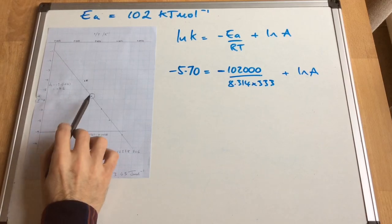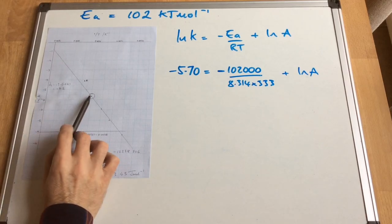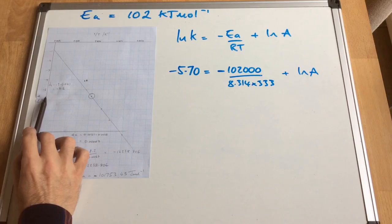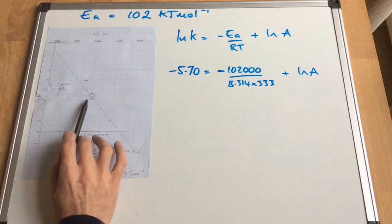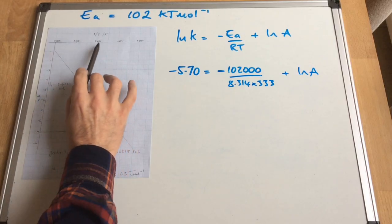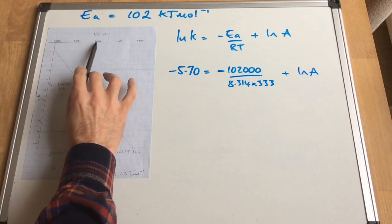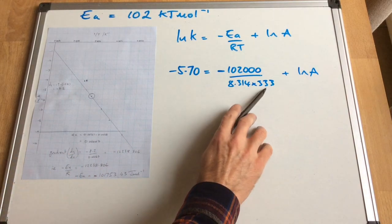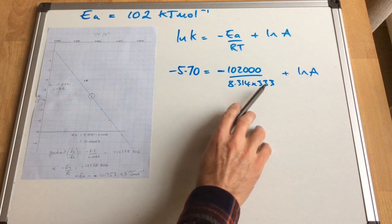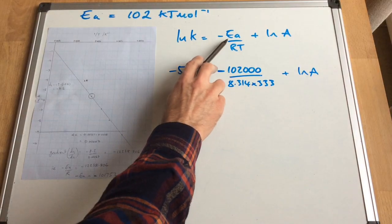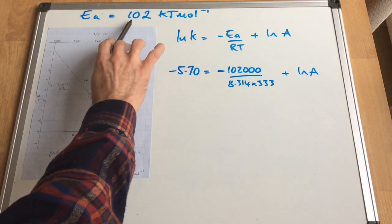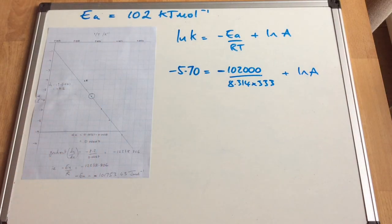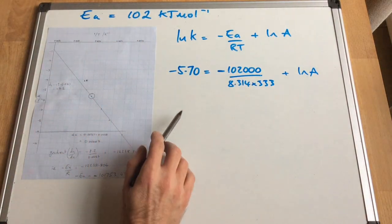So you can see I've just read off the axes that at that point there, I've got a ln k, a y-value of minus 5.70. And the x-value there, remember that's 1 over T, so that's 0.0030. So I've just done 1 over that, and I've got that 333 degrees from there. So the activation energy, remember we've just calculated it at 102 kilojoules per mole, but in the equation it has to be in joules per mole. So I've had to multiply that by 1,000. And that's given me these numbers here for this term.